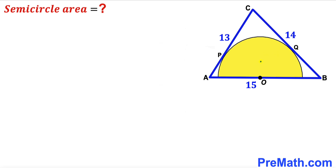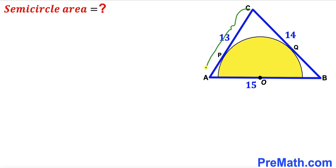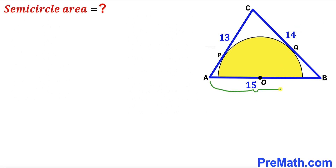In this video we have a yellow shaded semicircle with center O fully inscribed in a blue triangle ABC, such that points P and Q are the points of tangency. This side length of the triangle is 13 units, side BC is 14 units, and side AB is 15 units. Our task is to calculate the area of this yellow shaded semicircle.